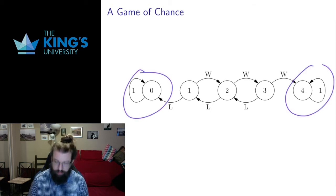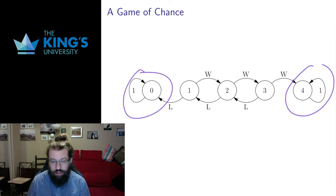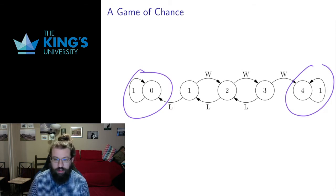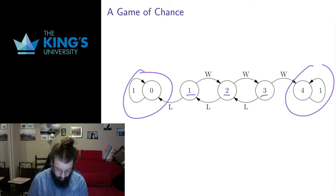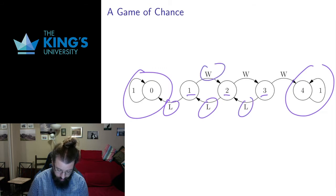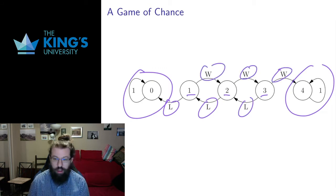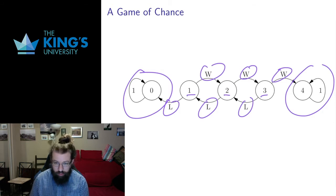If you get to zero stakes, you finish — zero stakes meaning you've lost. If you get to four stakes, you finish — four stakes is you've won, and that's your ending condition. From each of the intermediate places, if you were at one, two, or three stakes, you have a losing percentage to go down and a winning percentage to go up, and these have to add up to one to make this a probability situation.